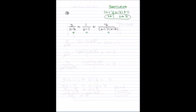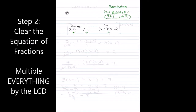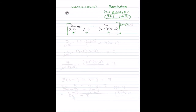Step two is to get rid of the fractions by multiplying by the LCD. In this case the LCD is going to be (x minus one)(x minus two). So I put big brackets around the entire equation and multiply each term by (x minus one)(x minus two).